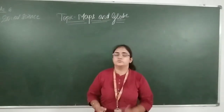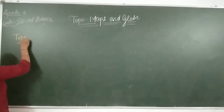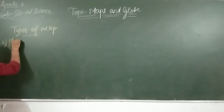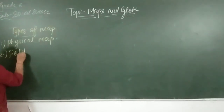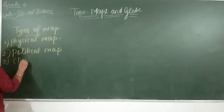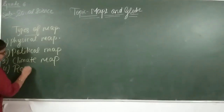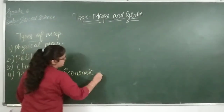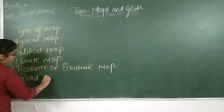Now we will discuss about the five types of map. We already learned about five types of map. First one is physical map. Second one is political map. Third one is climate map. Fourth one is resource or economic map. And fifth one is road map.